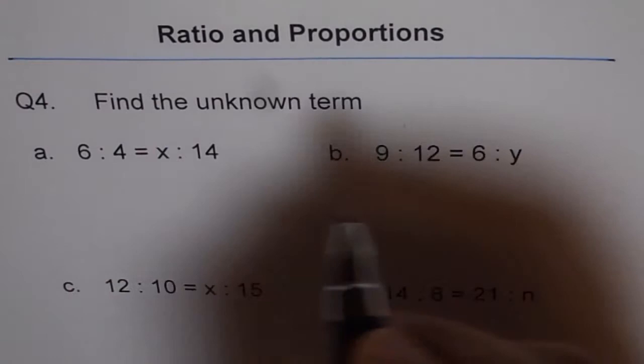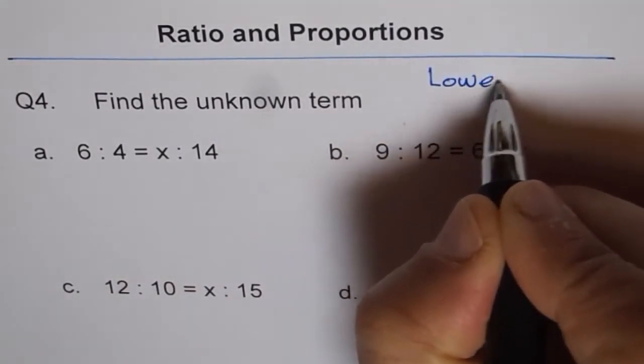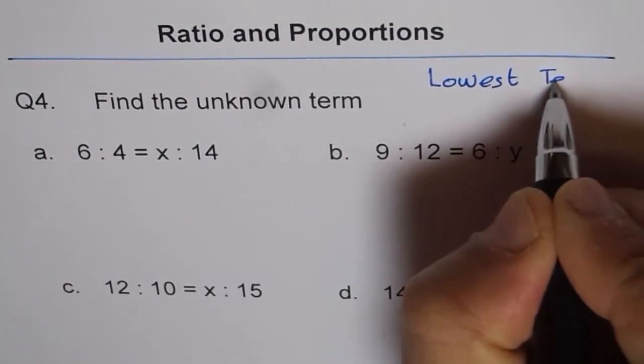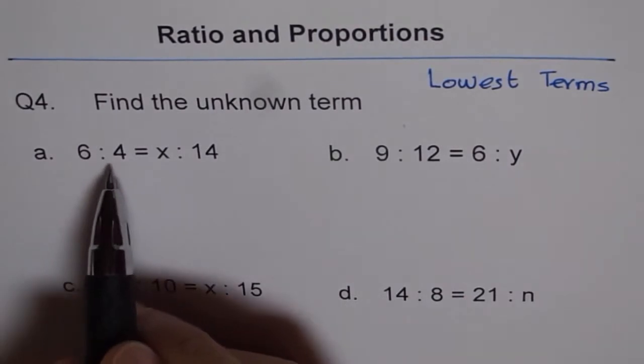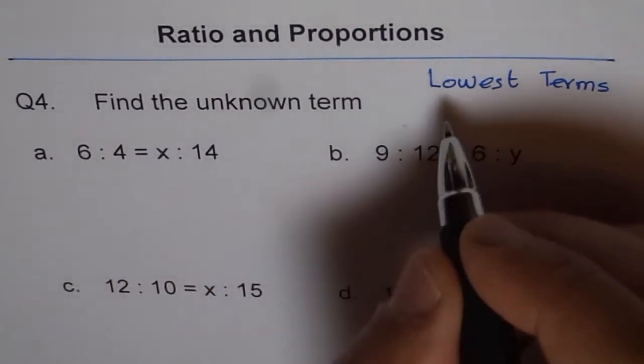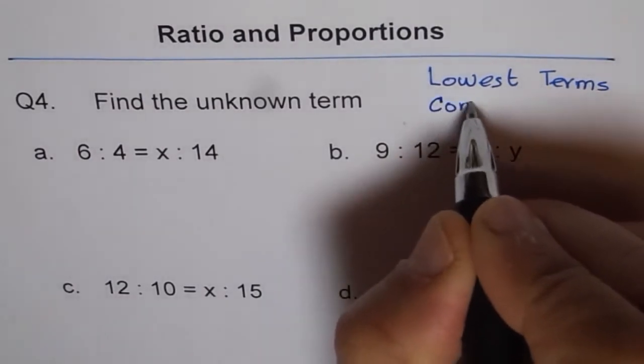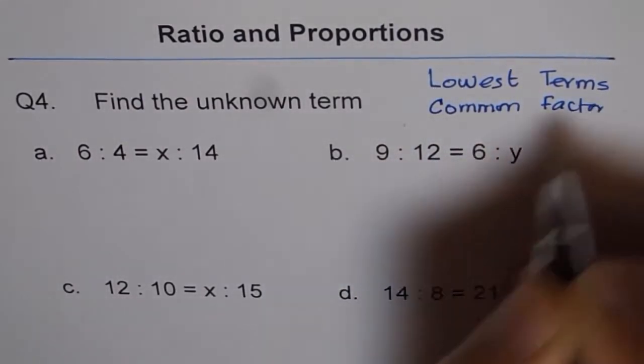So what should we do? In such cases, we should write this in lowest terms. That is the strategy. Lowest terms. So how to reduce it to lowest terms? That is by finding a common factor. We need to find a common factor.